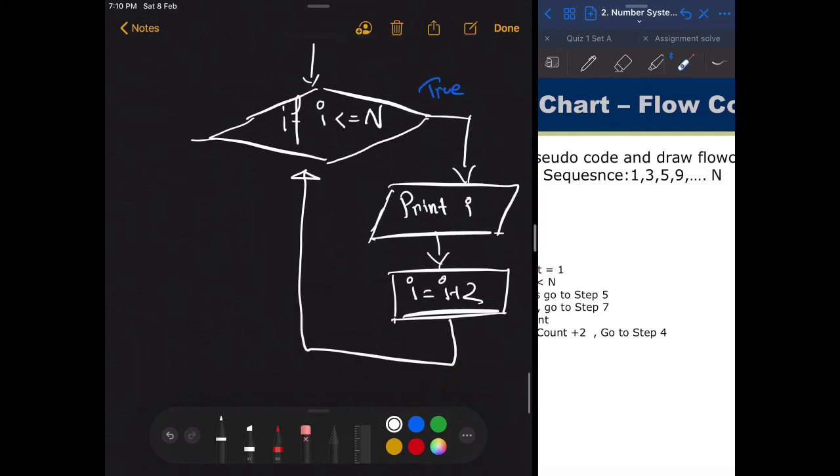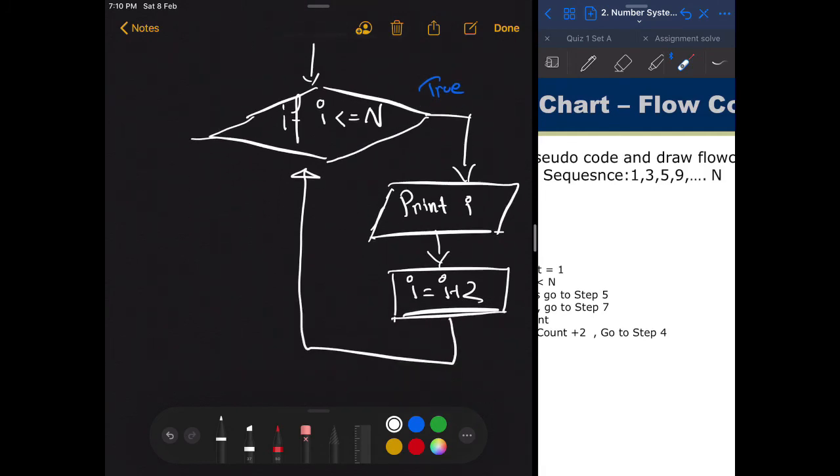And then this would go back up again into the decision box. So you can show the flow from here to here, or you can show the flow like this. Either way, whichever makes you comfortable, whichever looks good.